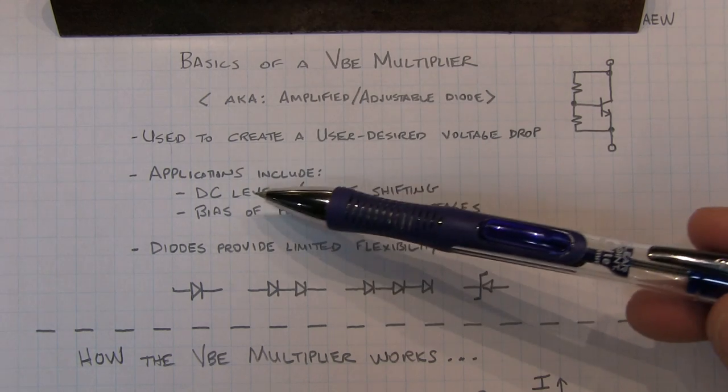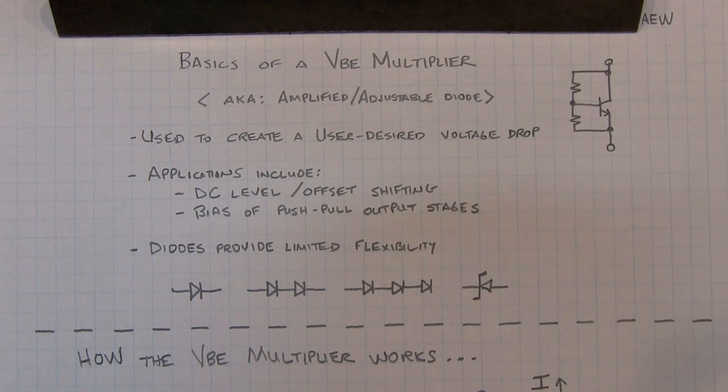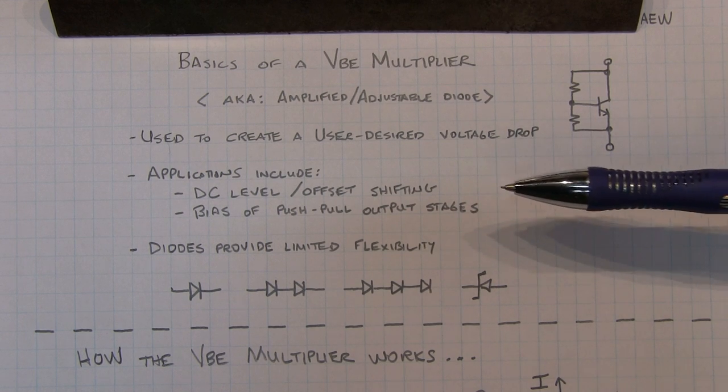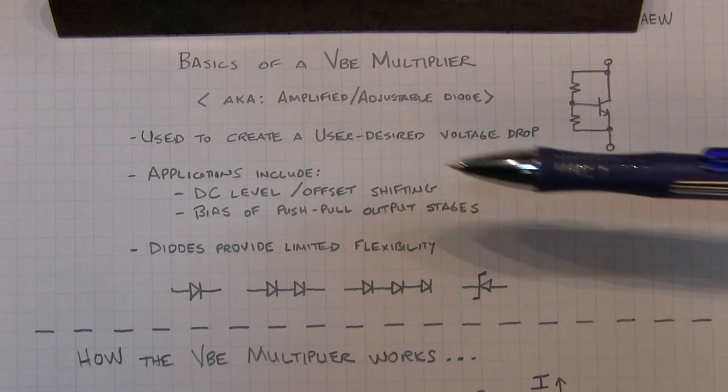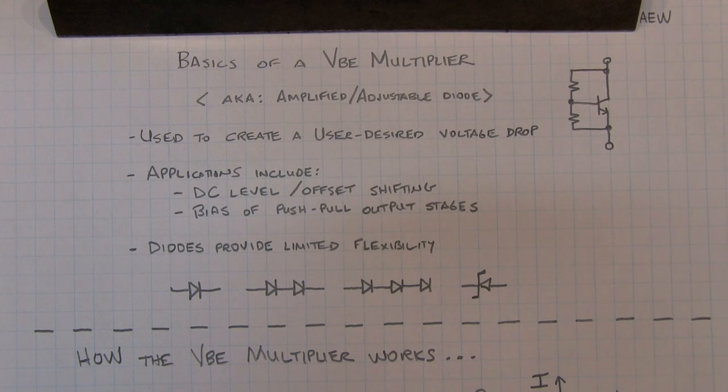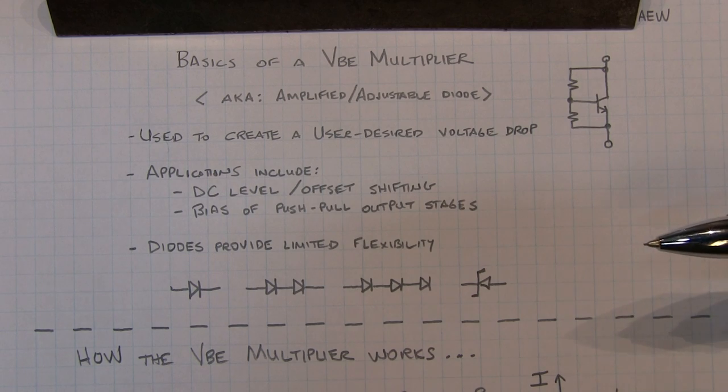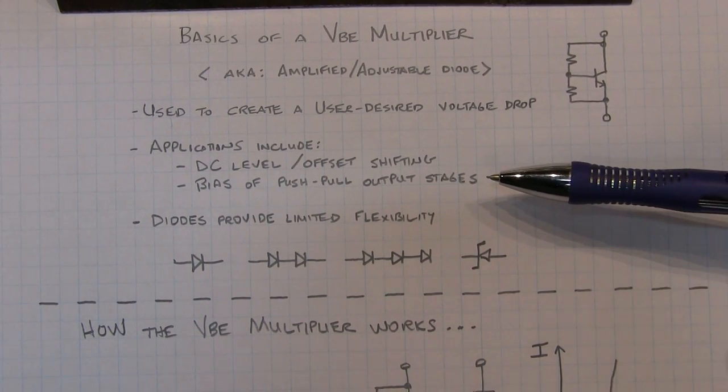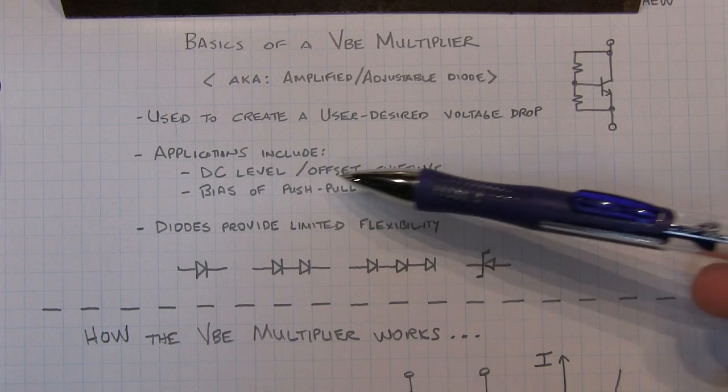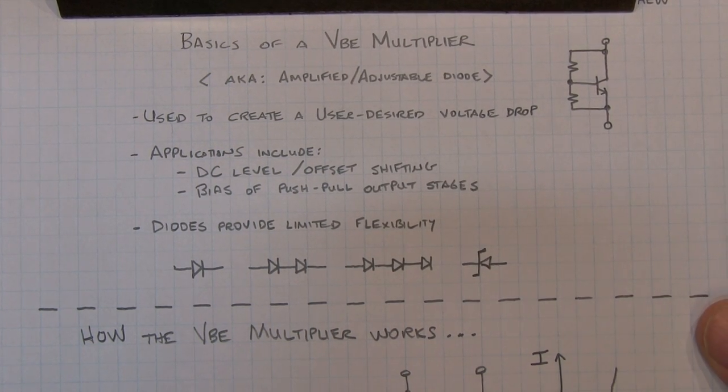Some applications include DC level shifting or DC offset shifting, oftentimes between stages of an amplifier. If you take the output of one amplifier and shift its DC operating point so it matches the appropriate common mode input range of the following stage. Another very common use, and probably one of the most common uses, is to set up the bias for push-pull output stages.